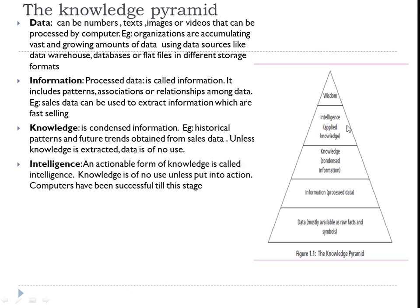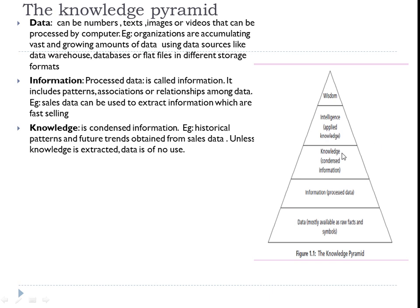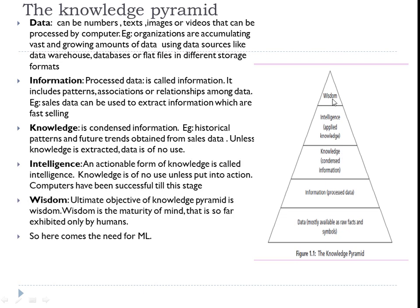Above knowledge we have a layer called intelligence. Knowledge is also of no use unless you put it into action. Intelligence is an actionable form of knowledge. Computers and robots implemented using AI today are successful only up to this intelligence layer. Above intelligence you have something called wisdom, which is the ultimate objective of the knowledge pyramid. Wisdom is a maturity of the mind that is so far exhibited only by humans — and here comes the need for machine learning.